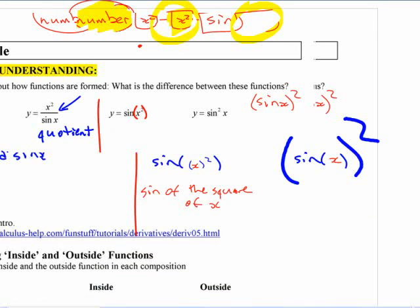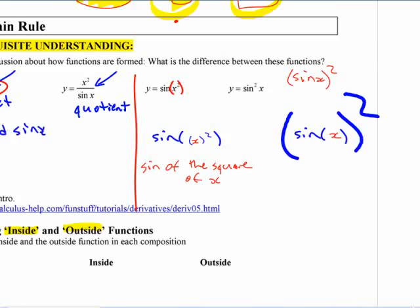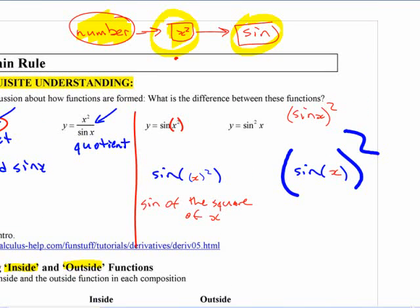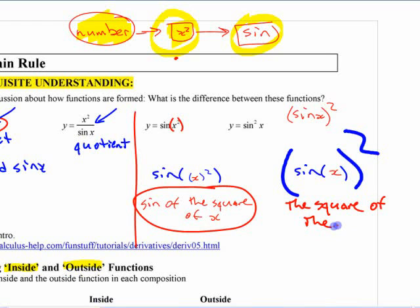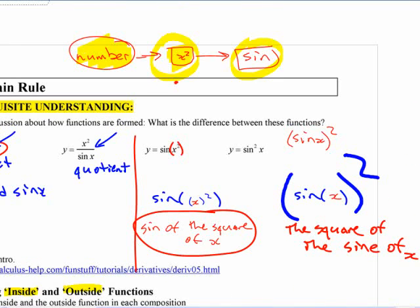So if we have to list here what's the inside and outside function. I think I listed the same. No, I didn't list the same functions down there. So let's write it up here. This one was the sine of the square of x. This would be the square of the sine of x. You start with x, then you take the sine of that, then you square that result.